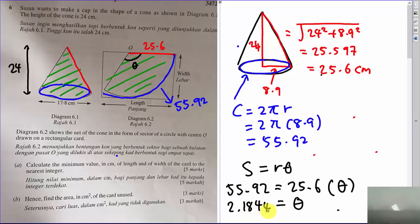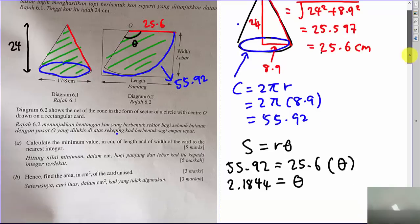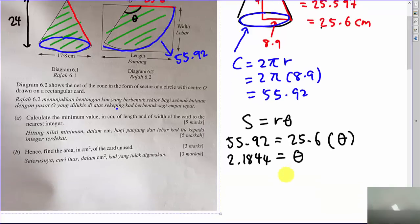So θ = 2.1844 radians. To make it easier to understand, I'll convert to degrees by multiplying by 180 and dividing by π, giving approximately 125.16 degrees.